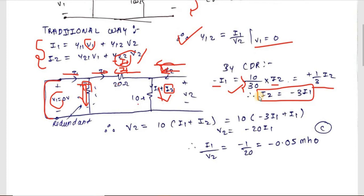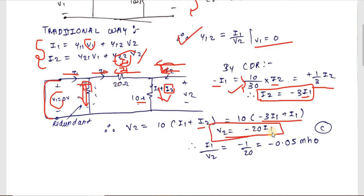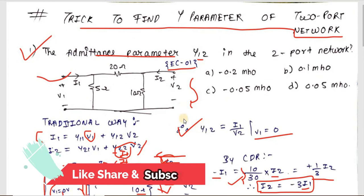Now write V2 = (I1 + I2) × 10. Substituting I2 = −3·I1 gives V2 = (I1 − 3·I1) × 10 = −2·I1 × 10 = −20·I1. Therefore Y12 = I1/V2 = −1/20 = −0.05 siemens. So −0.05 is the answer for this question.